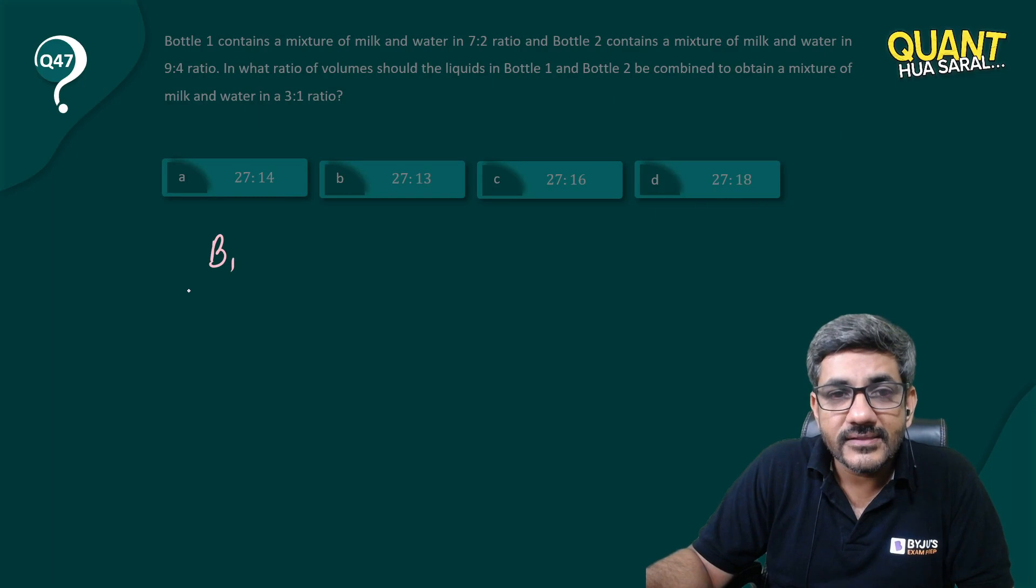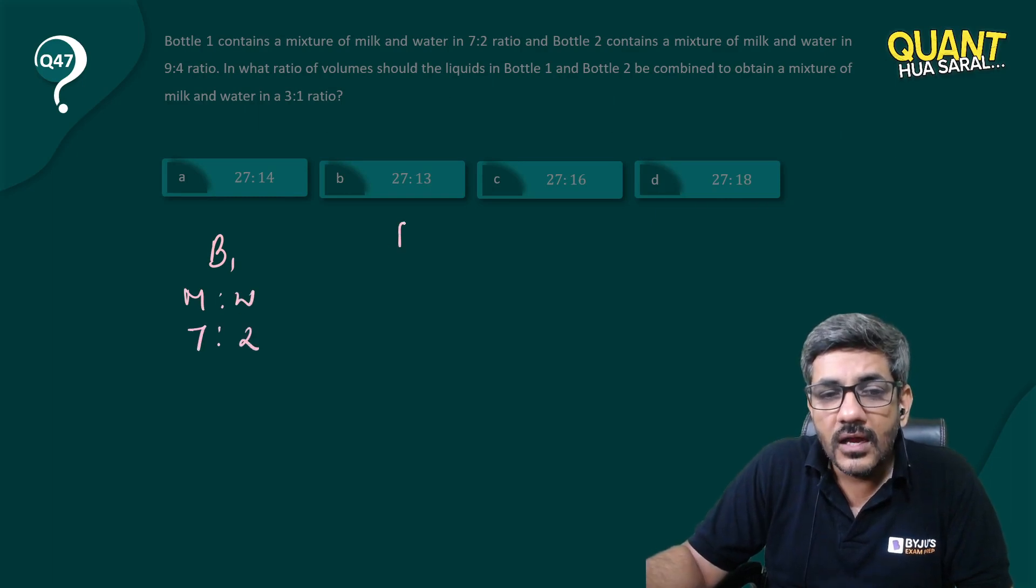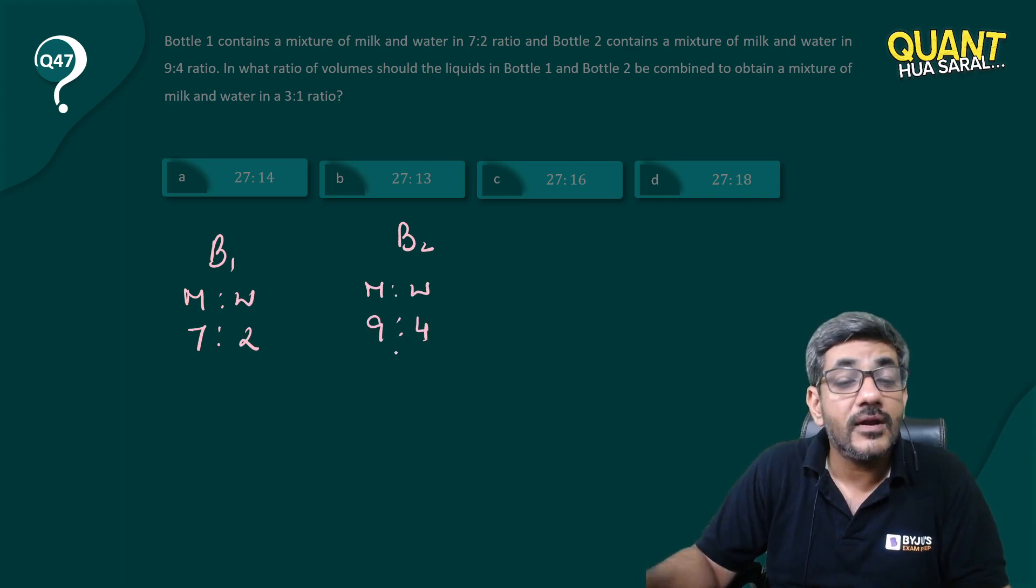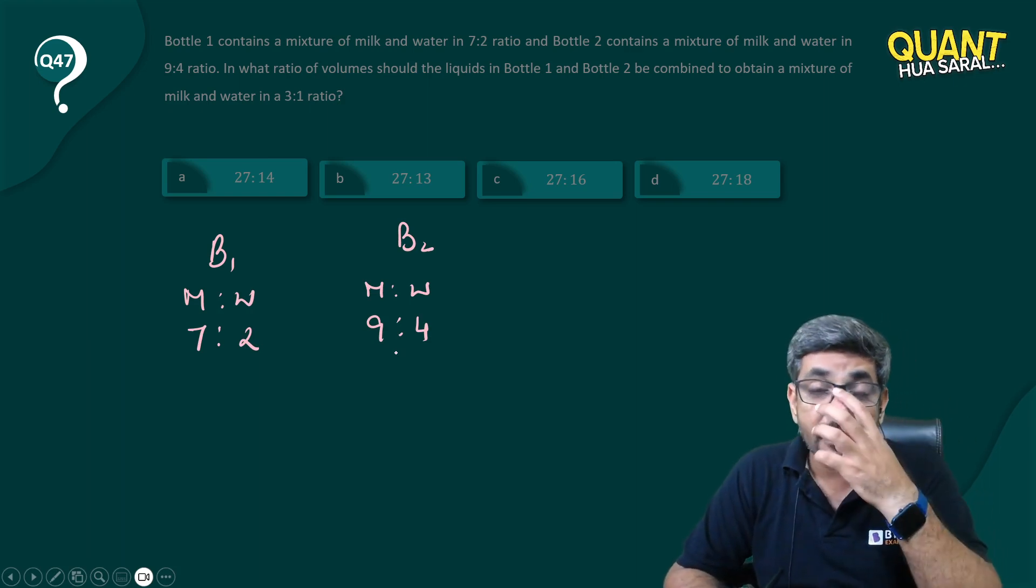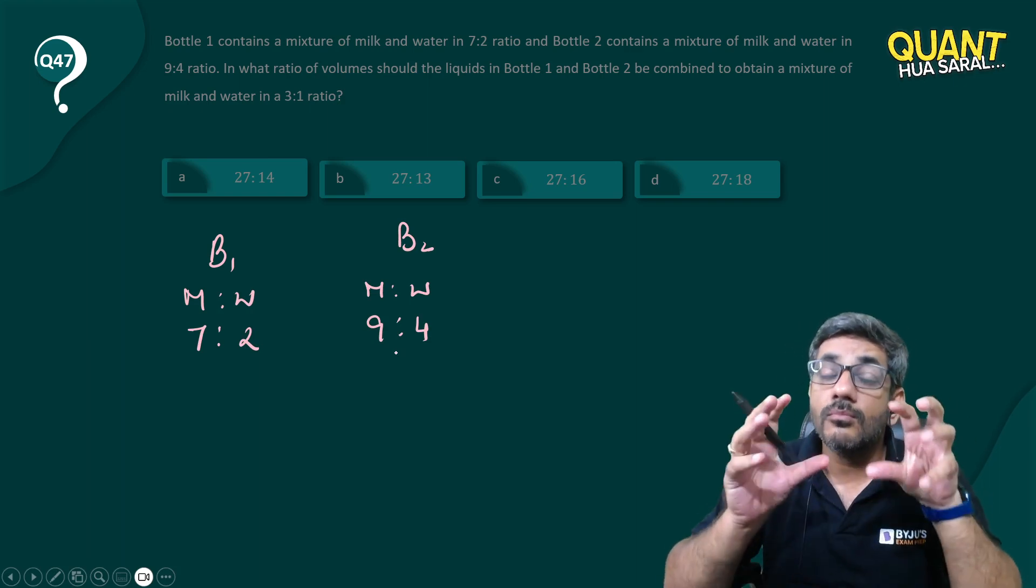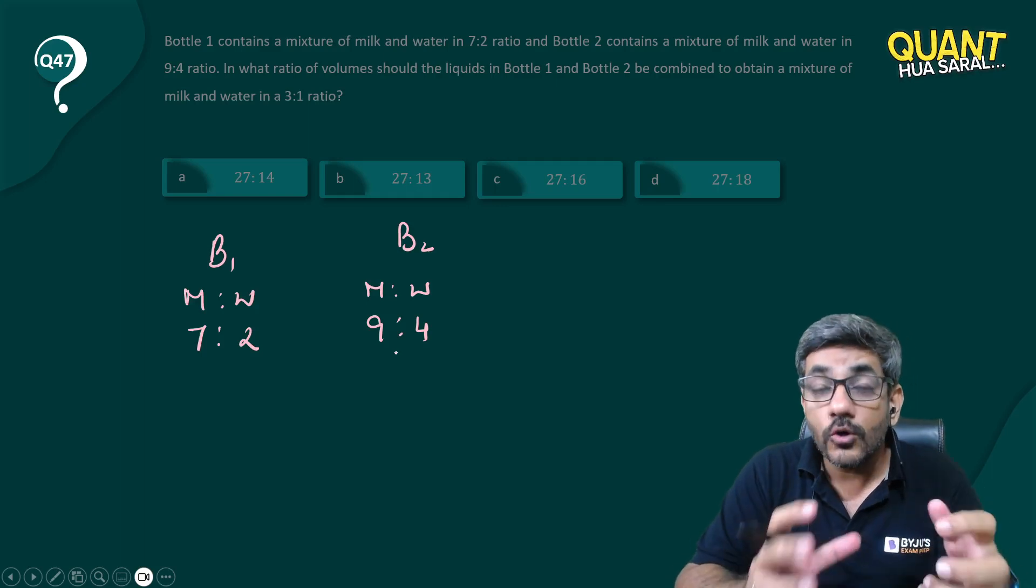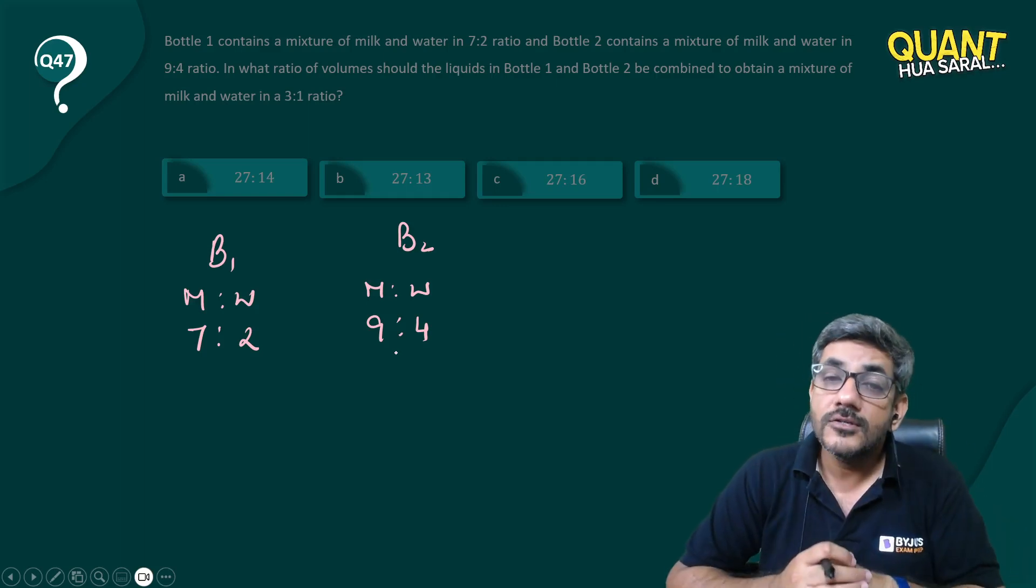Bottle 1 contains milk and water in a ratio of 7:2, and Bottle 2 contains milk and water in a ratio of 9:4. I've told you before, the sum of these ratios is very important because most probably the total will be a sum of the two numbers which are there in the ratio.